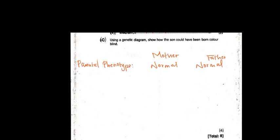From parental phenotype, we go to parental genotype. The parental genotype: for the mother it's going to be X capital R and X small r, meaning she is a carrier. The father is a normal man, XRY.